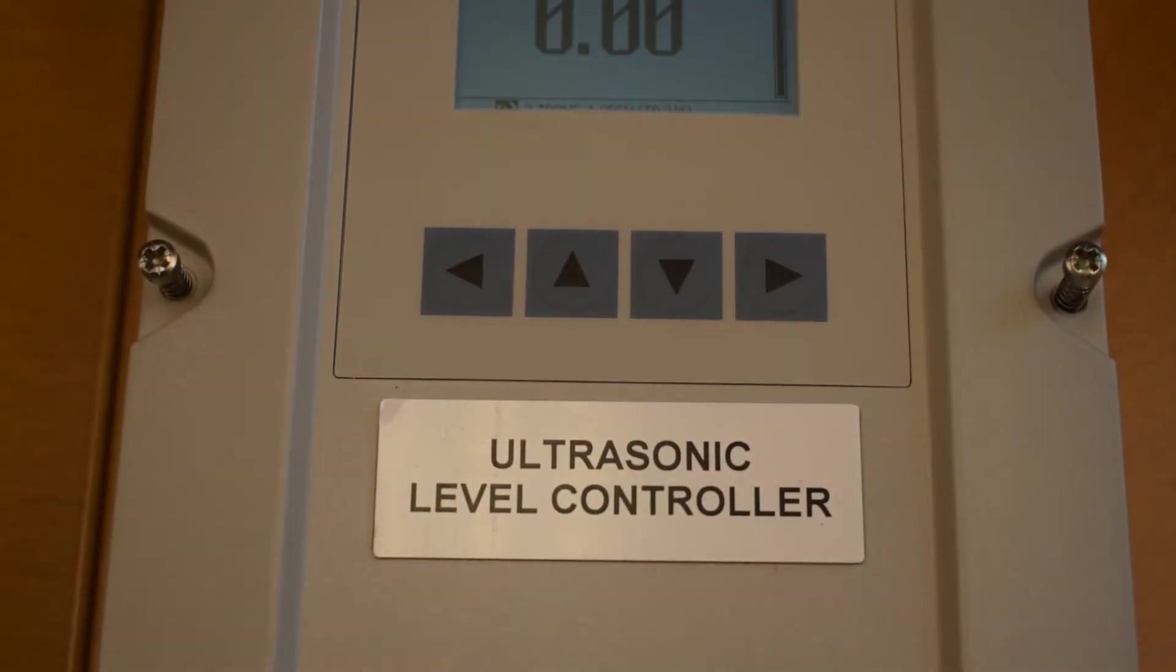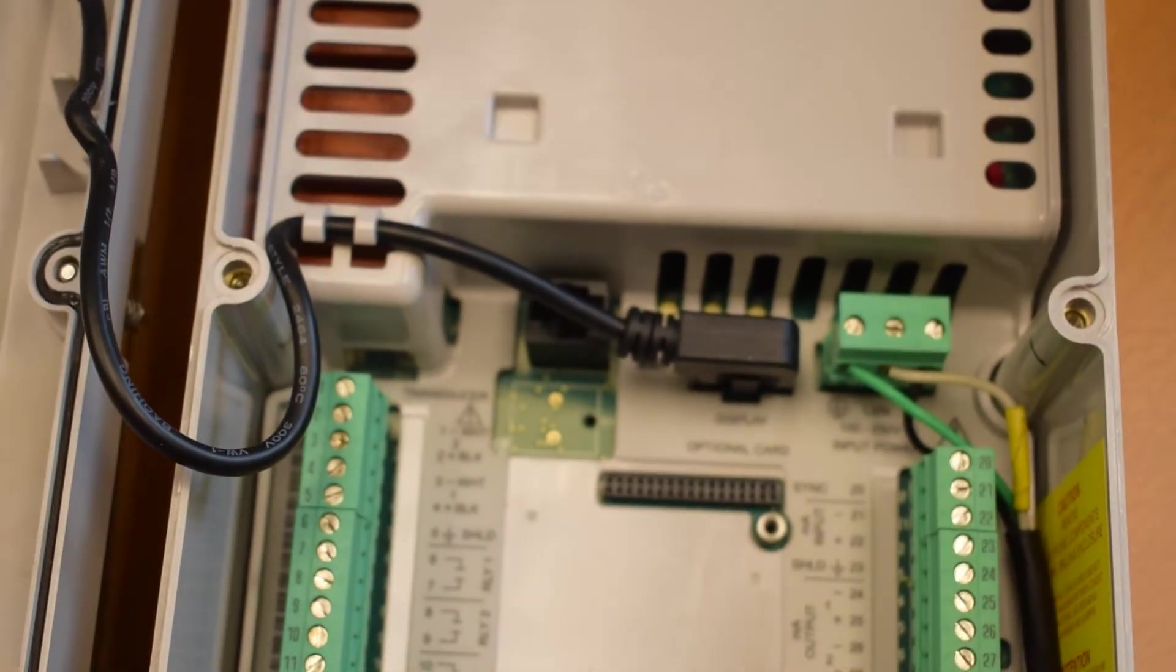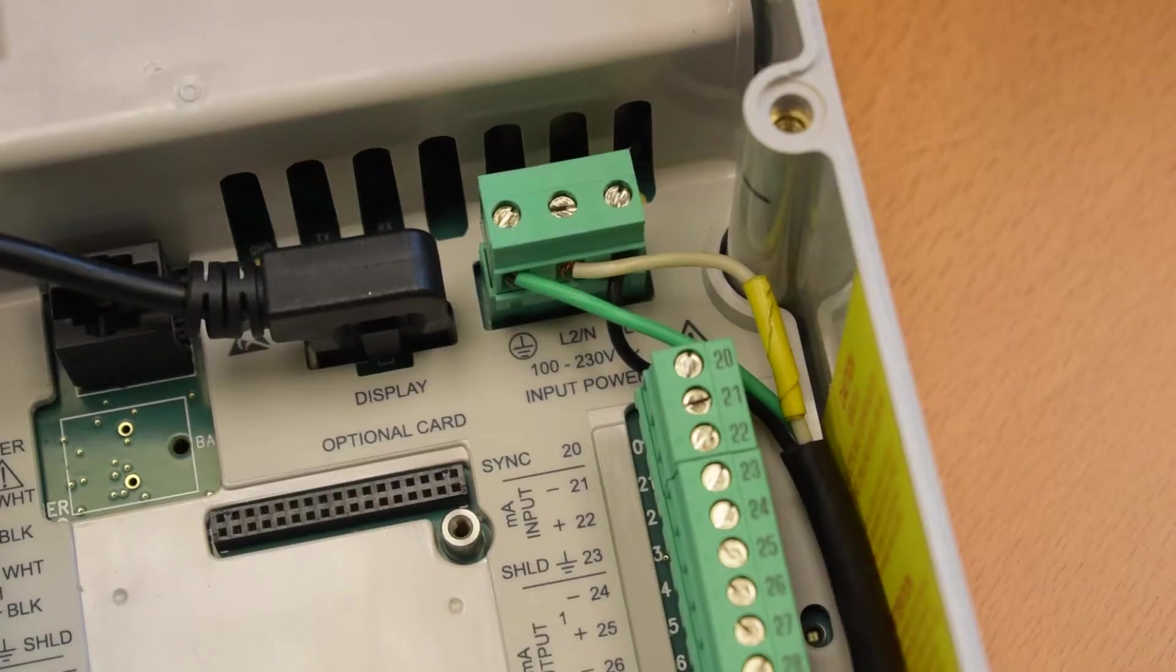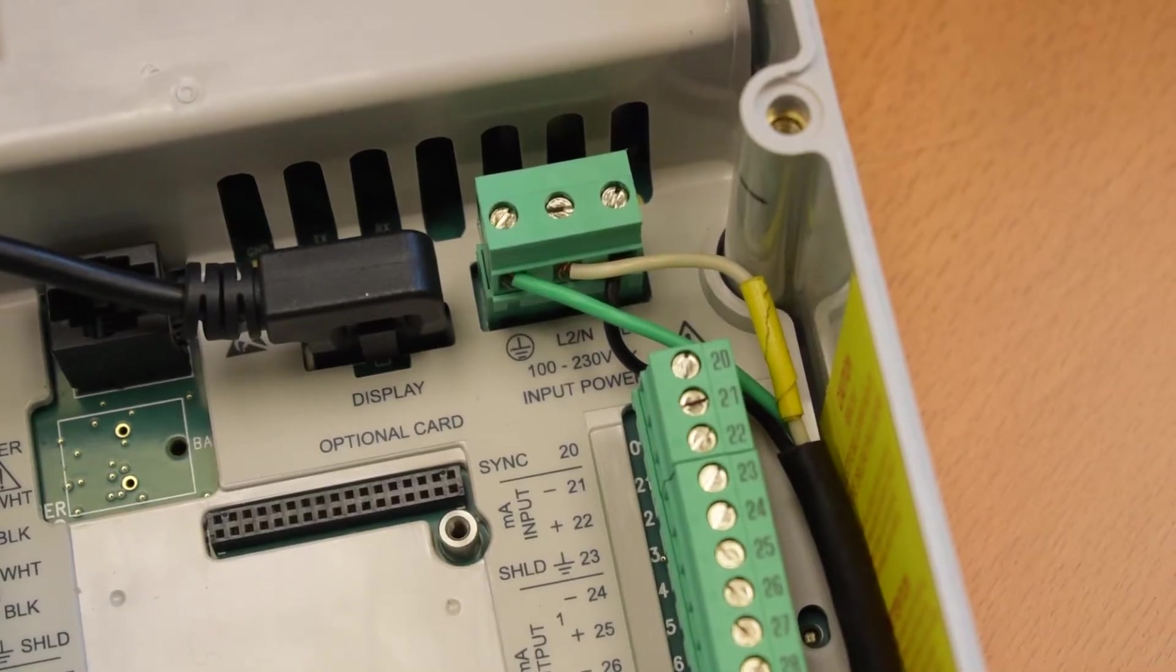Open the front cover of the HydraRanger 200 by loosening the six screws visible from the front panel. The power connections are located in the top right corner.